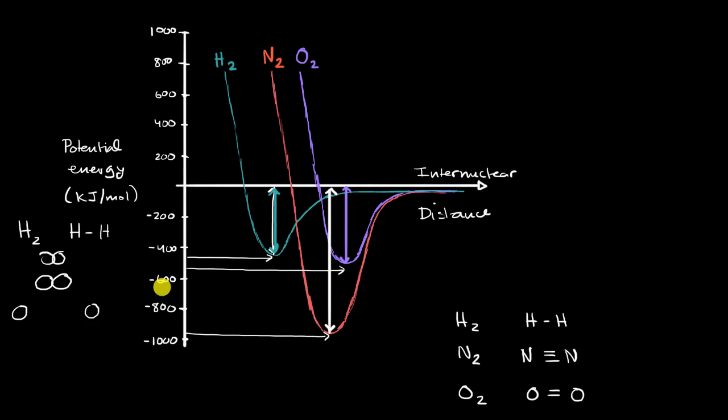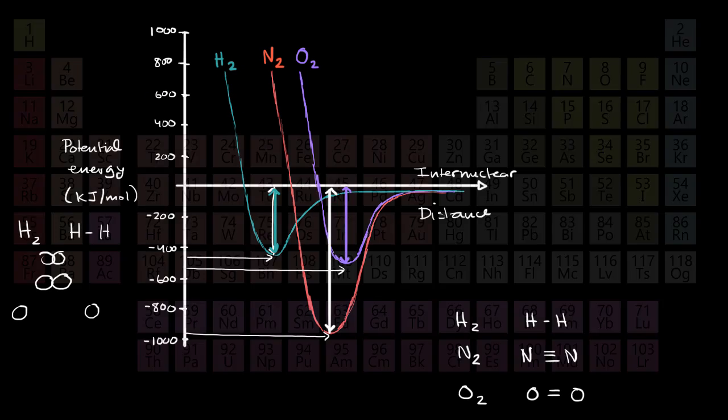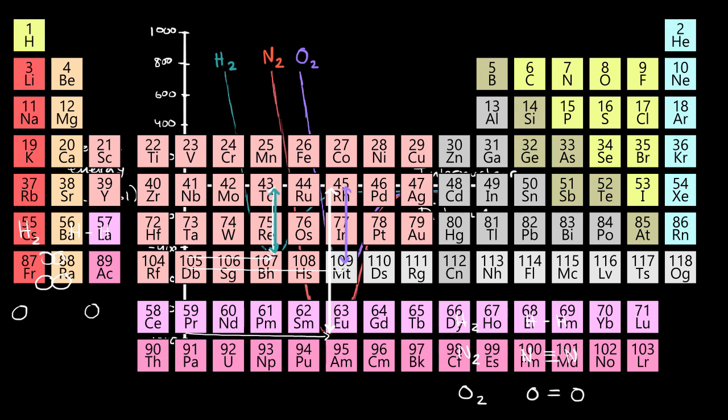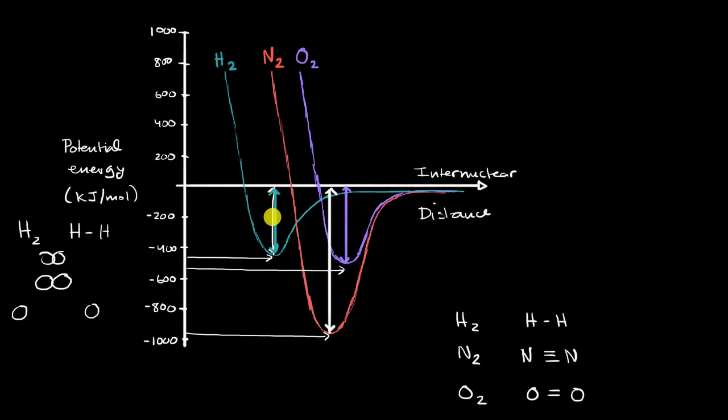But let's also think about the radii of these atoms. If we get a periodic table of elements here, we can see that hydrogen only has one electron in that first shell. And so it's going to be the smallest. So that makes sense over here that your distance, where you have the lowest potential energy, is shortest for the diatomic molecule that's made up of the smallest atoms.